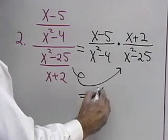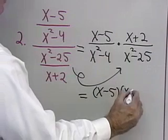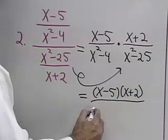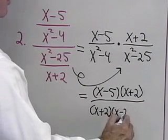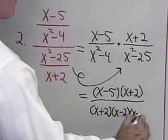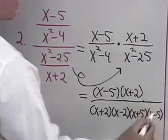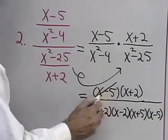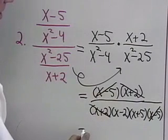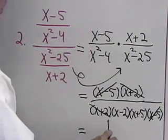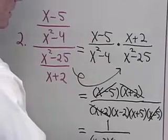Now I simply do my factoring. I have x minus 5 times x plus 2 in the numerator when I multiply. In the denominator, x plus 2 times x minus 2, and here x plus 5 times x minus 5. I look for common factors: x minus 5 divides out with x minus 5, and x plus 2 divides out with x plus 2. What's left in the numerator is 1, and in the denominator, x minus 2 times x plus 5.